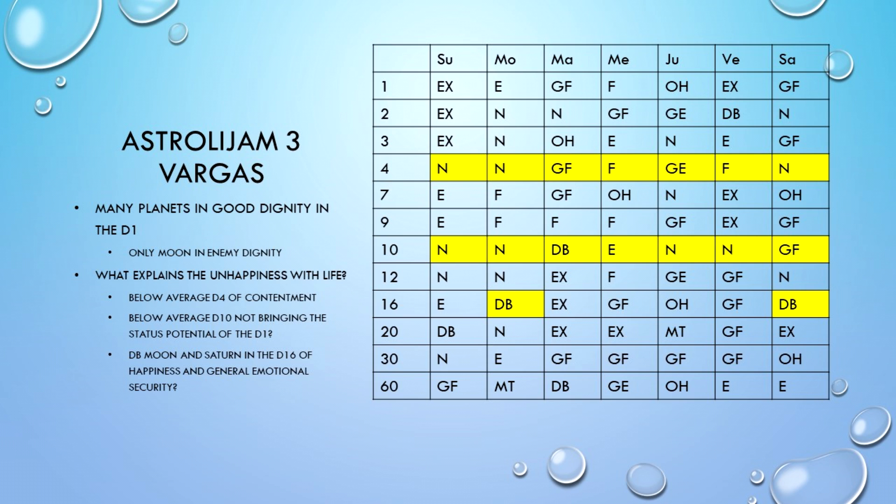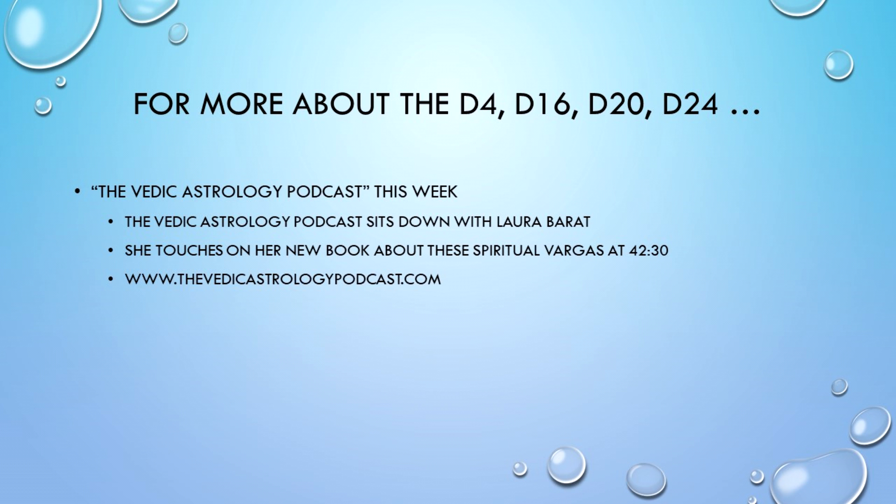I'm hoping that the student will come along and talk about the D2 because some excellent insights around the D2 there. And then look in that D16, we've got the debilitated moon and the debilitated Saturn in the D16 of general emotional security and happiness. Is this what has actually been so hard to cope with given the promise that seems to be in the D1? Can the person find it too hard to reconcile what looks like should be happening in the D1, but what actually feels like is occurring in those specific areas of life?